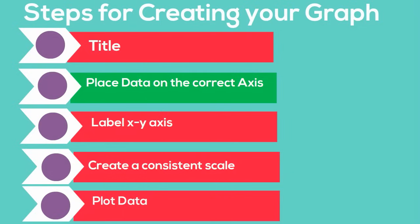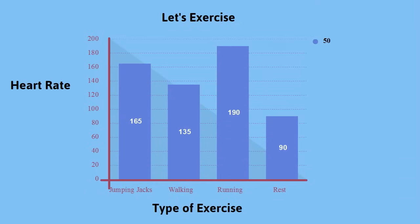So let's work through each one of these steps as we create a graph from this data table. Here is my completed graph. I will go through each step and show you what I did. First thing I did was I came up with a title for the graph, Let's Exercise. The reason I did it first is because a lot of times I have found my students just forget to title it. So let's go ahead and do it first and get it over with.